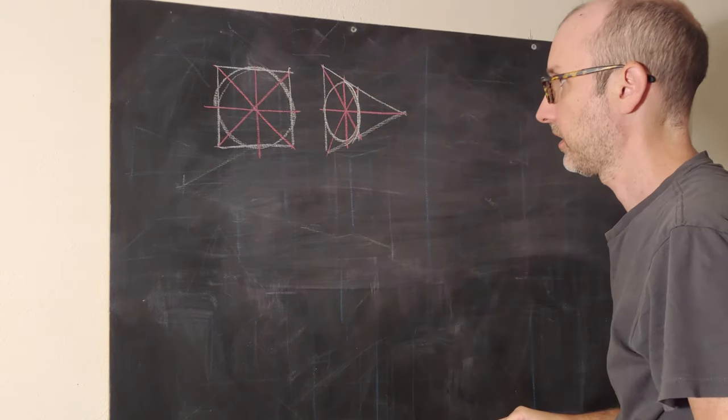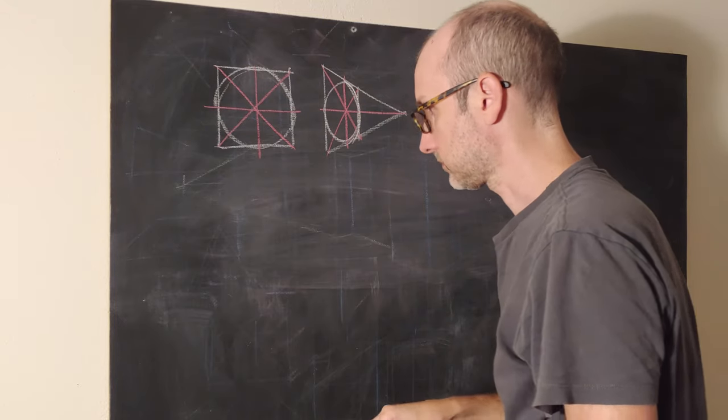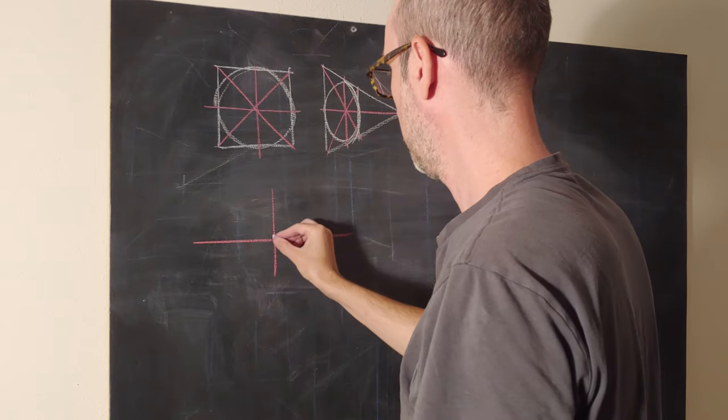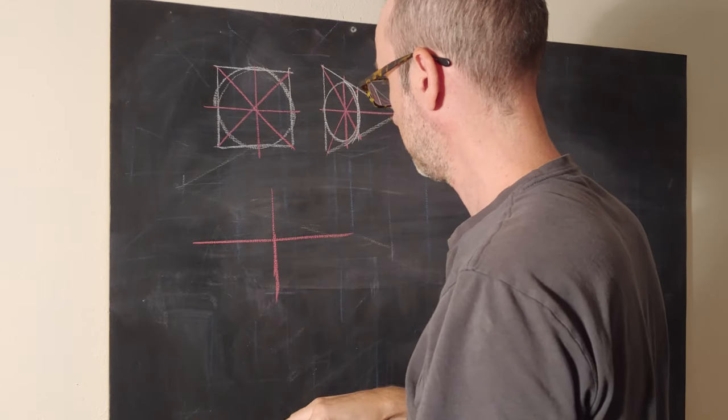One of the things that we know about circles is that when you translate them into perspective, they create an ellipse.